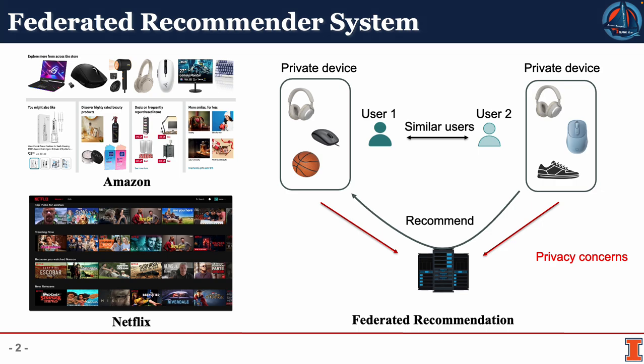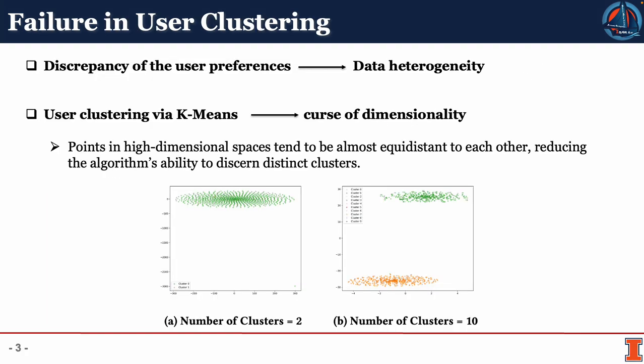However, these systems usually operate by consolidating vast amounts of user data centrally, leading to potential privacy concerns. Instead of directly sending user interaction data to a central server, a federated recommender system processes the data locally on users' devices, and only essential model updates are sent back to the central server for centralized model learning.